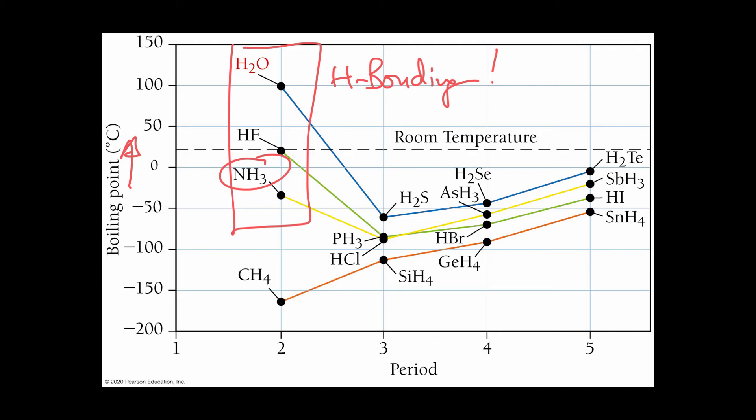And if you take something like NH3, which is ammonia, you've got the two things you need for a hydrogen bond. You've got the hydrogen attached to a very electronegative atom, and you've got the lone pair on a very electronegative atom.